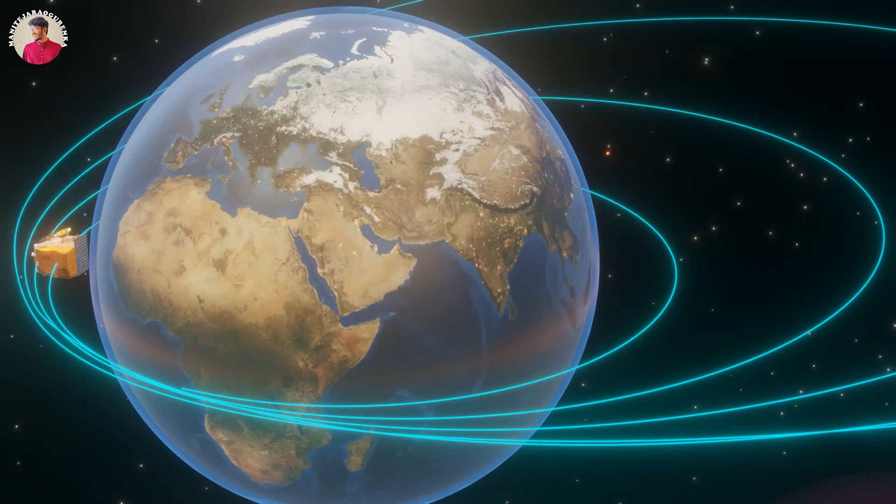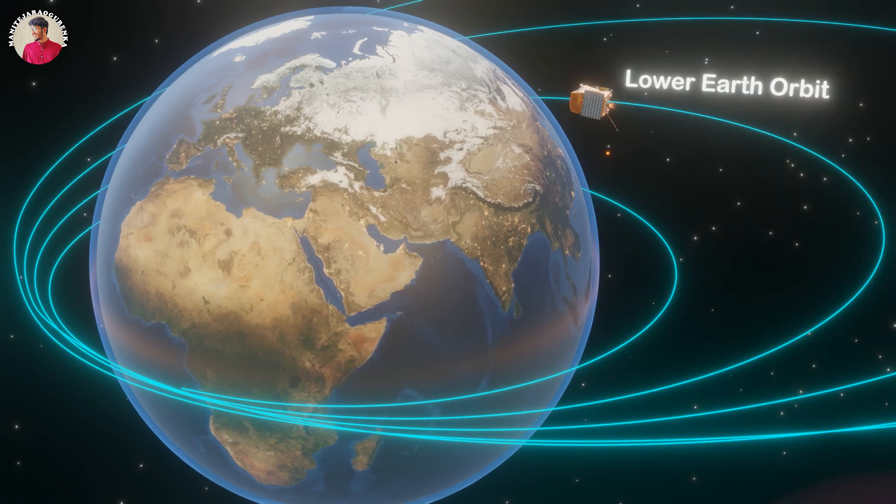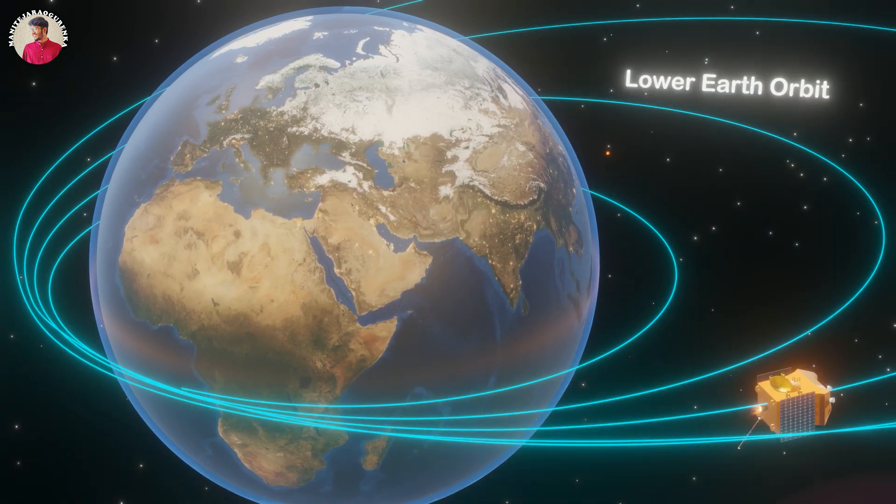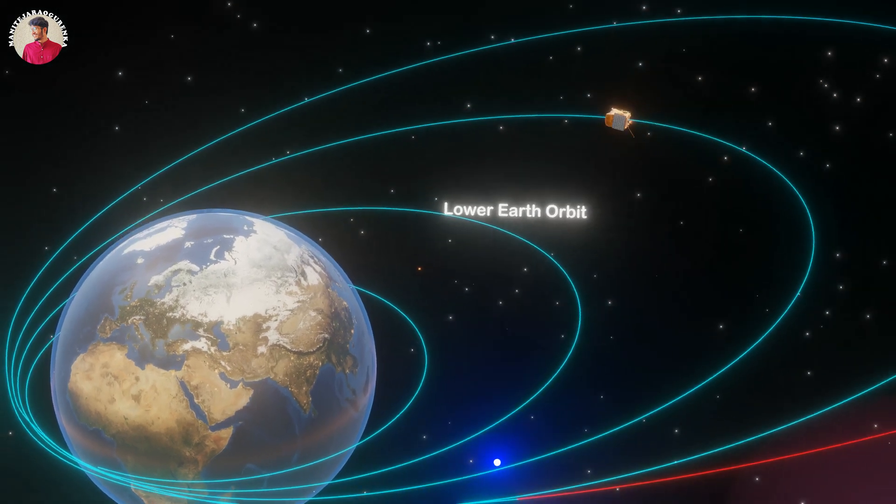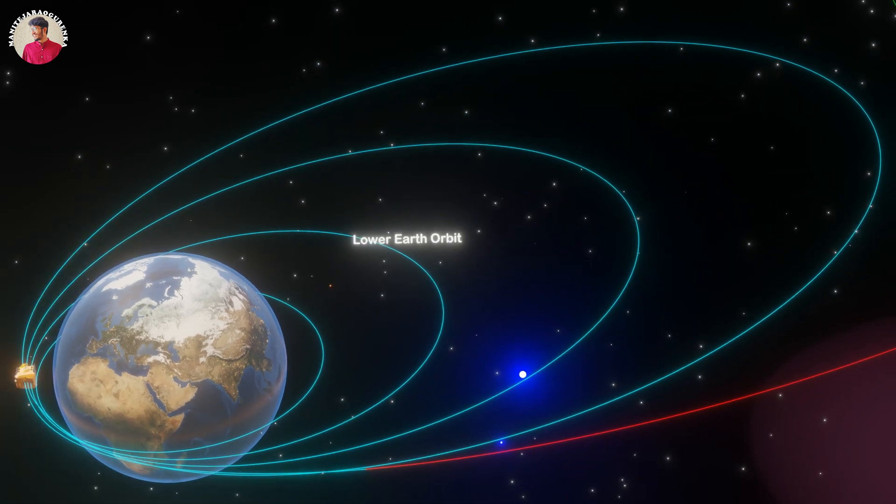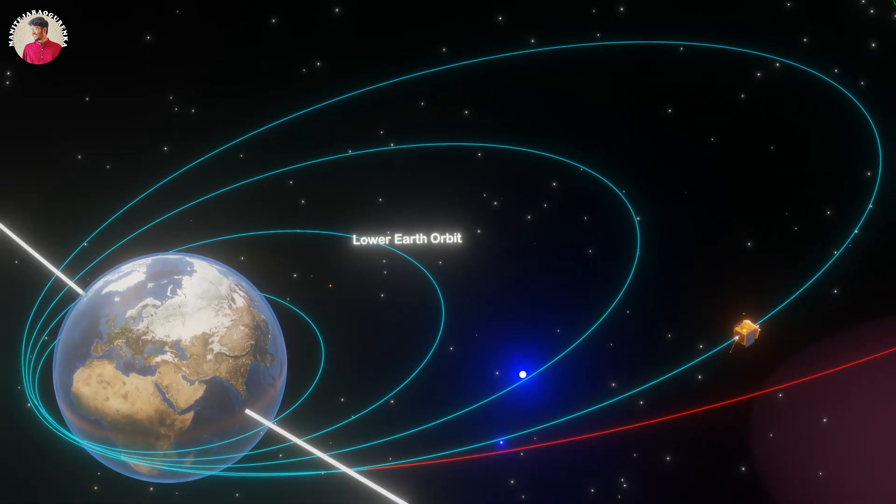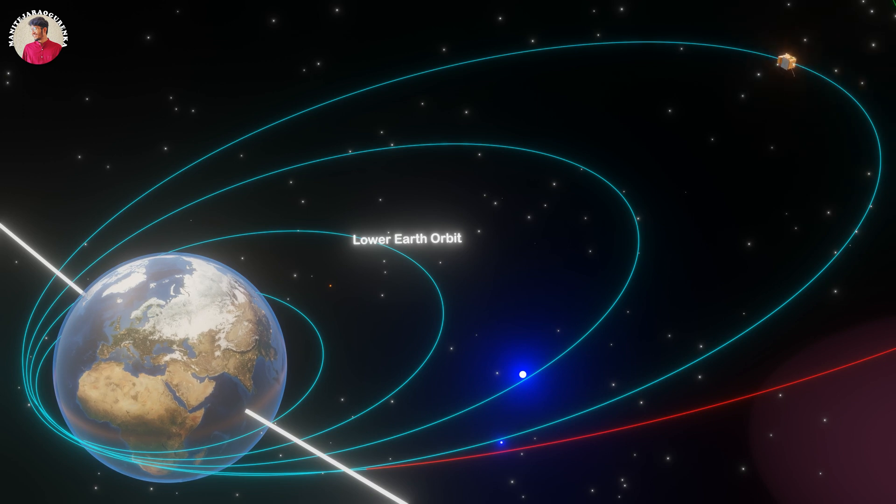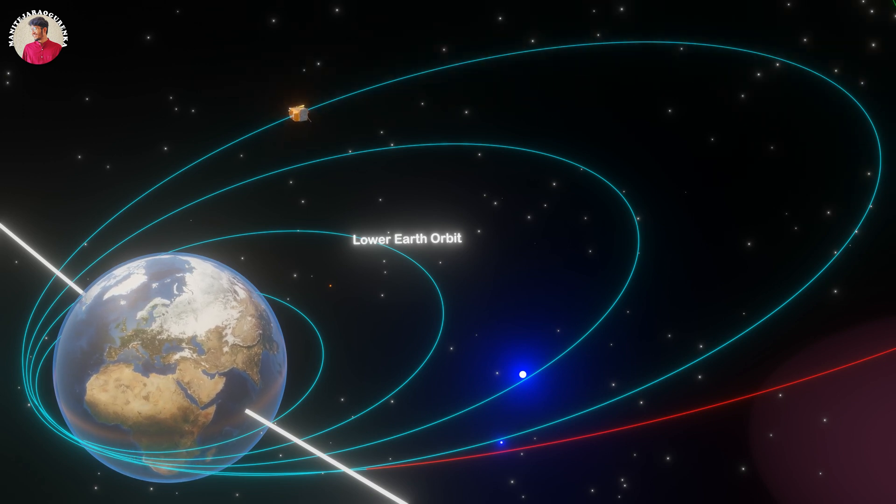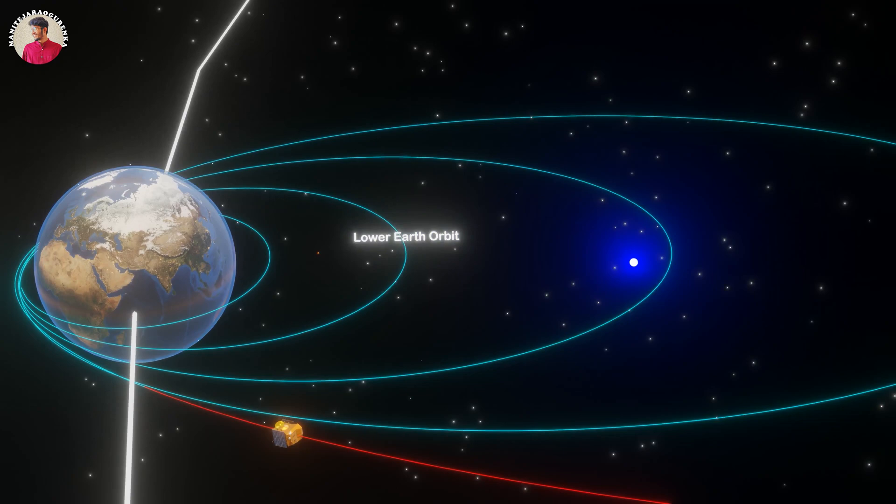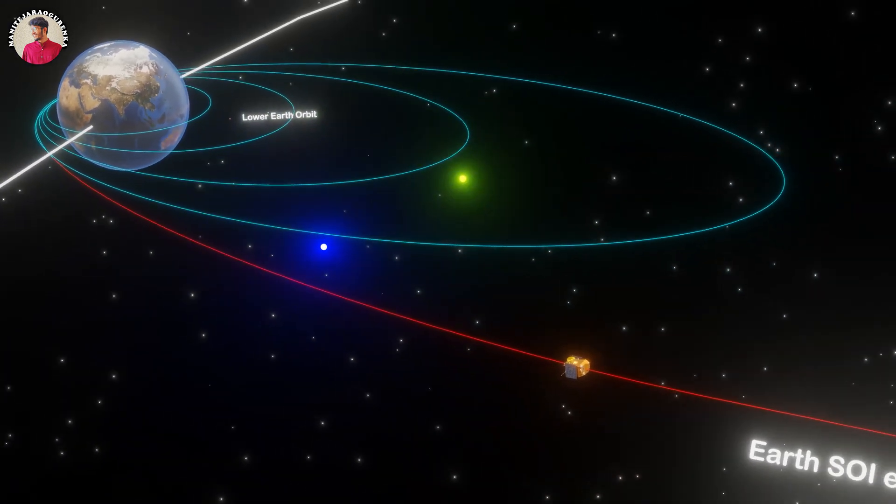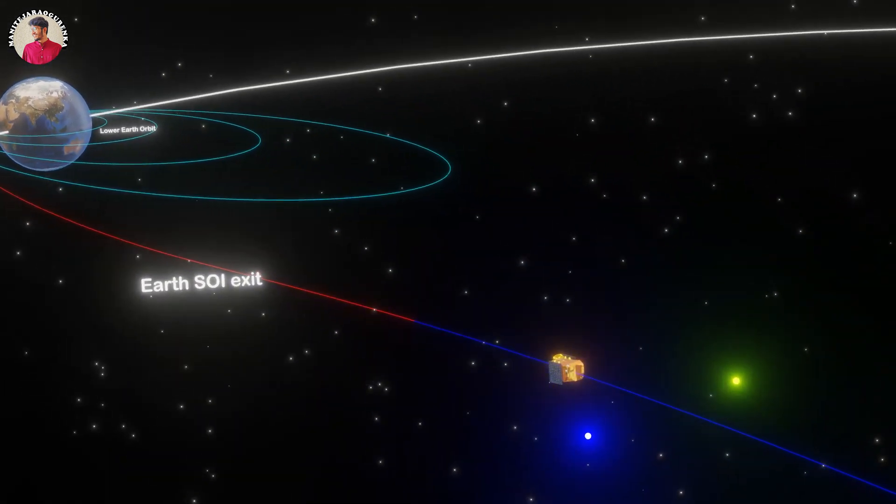The Aditya L1 will be placed in a lower Earth orbit. Subsequently, the orbit will be made more elliptical, and later the spacecraft will be launched towards Lagrange Point 1 by using onboard propulsion. As the spacecraft travels towards L1, it will exit the Earth's gravitational sphere of influence SOI. After exiting SOI, the cruise phase will start.